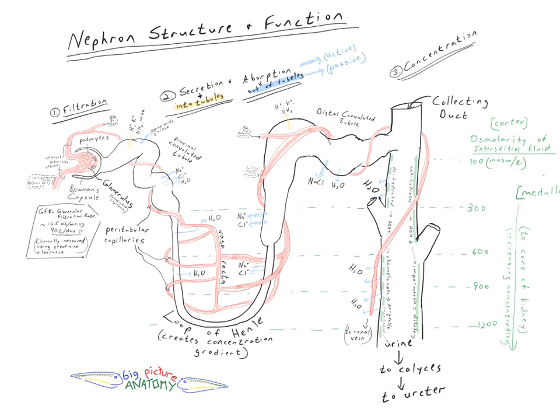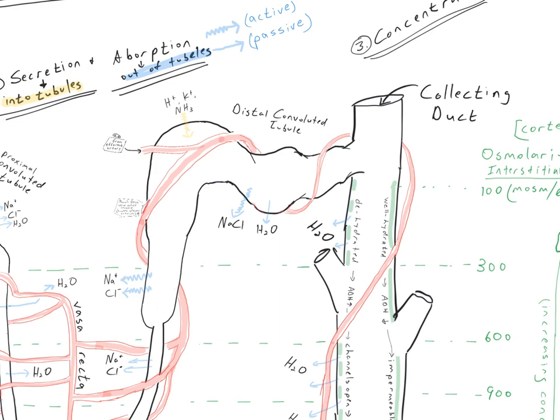When we get to the distal convoluted tubule, we see some repeat action with a little more focus on the movement of hydrogen ions — active secretion into the tubules of hydrogen ions, regulating pH in the blood and interstitial fluid, along with potassium and sodium, which allows for movement of sodium out. There is also active absorption of sodium chloride and the water that follows it. Eventually we get a very dilute filtrate coming into the collecting duct after all of these absorptions and secretions happen.